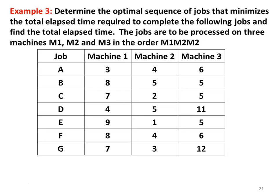We take up an example to solve the problem. The procedure is the same as defined earlier — we have to identify the minimum time among the machines, then process the job with the minimum time in a particular sequence. Determine the optimal sequence of jobs that minimizes the total elapsed time required to complete the following jobs and find the total elapsed time. The jobs are processed in the three machines M1, M2, and M3 in the order M1, M2, M3.